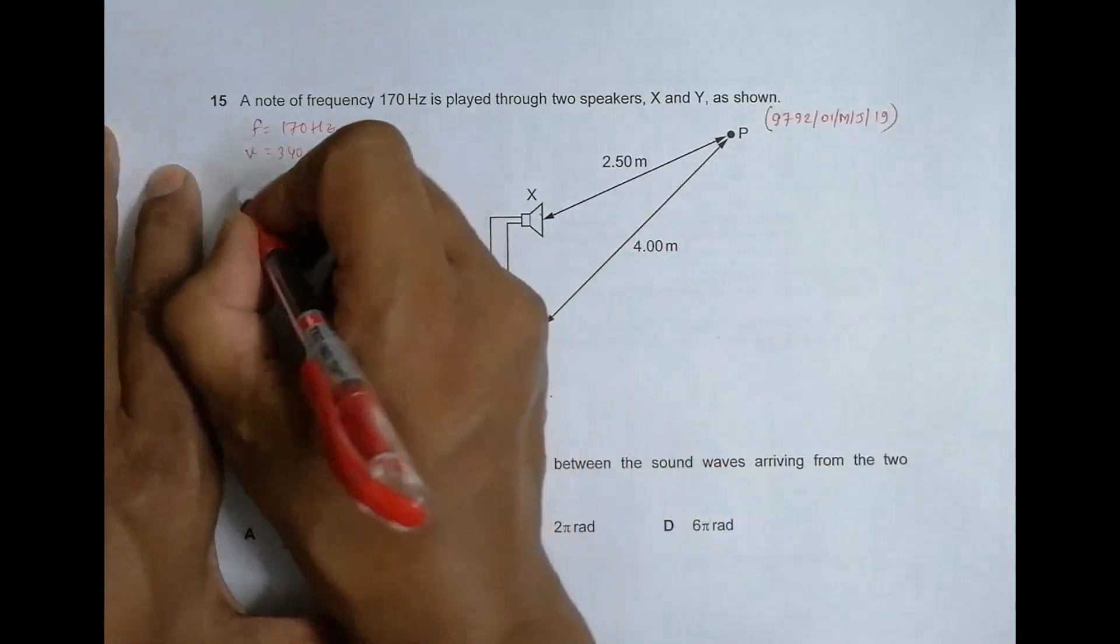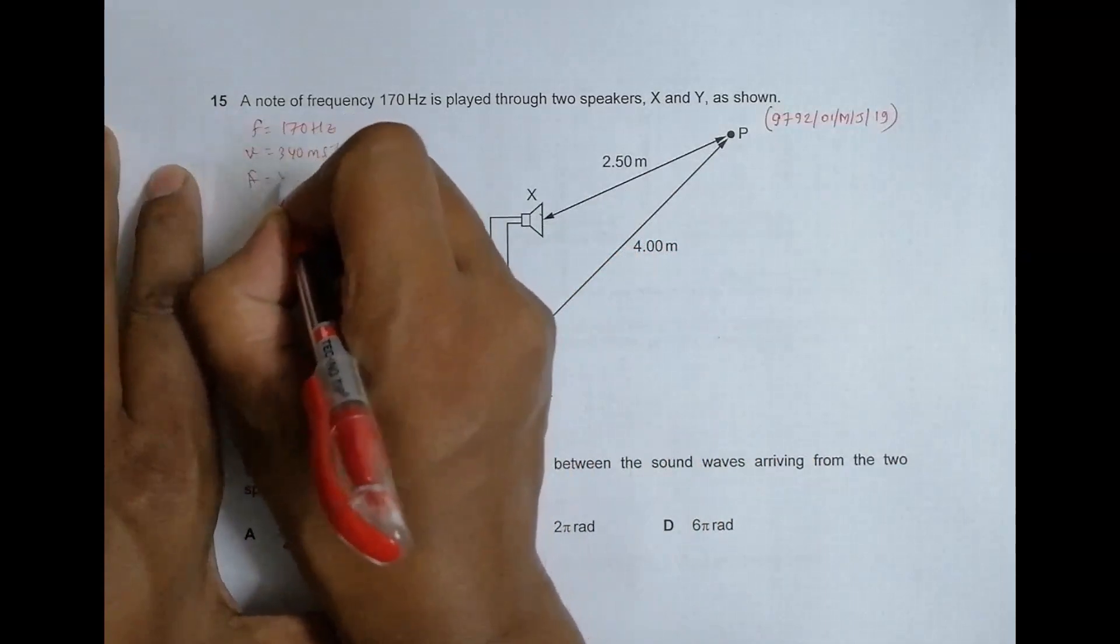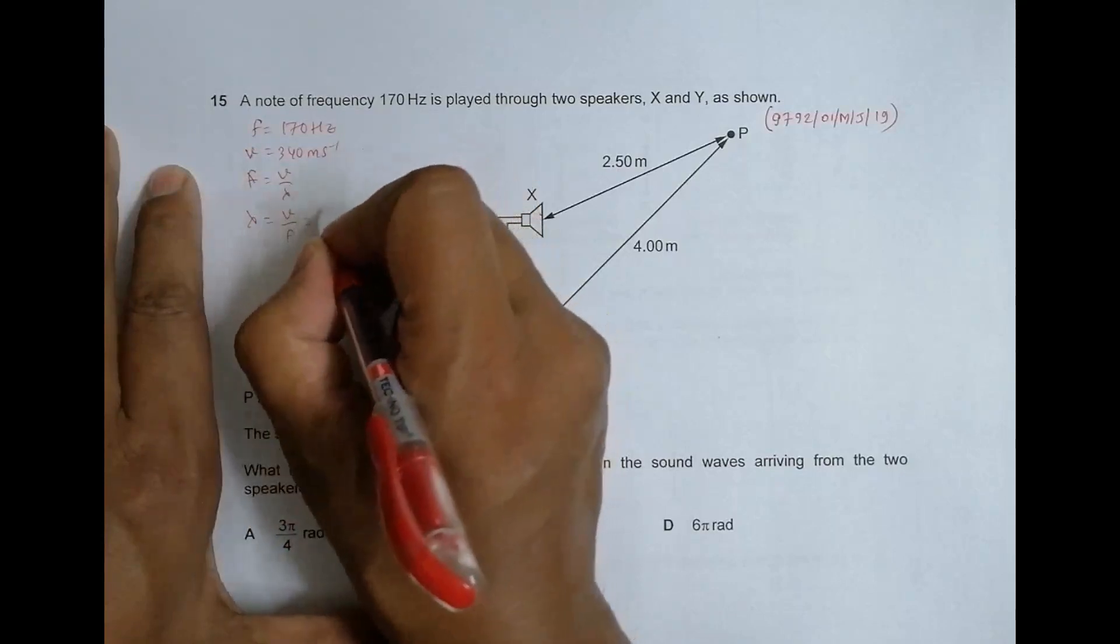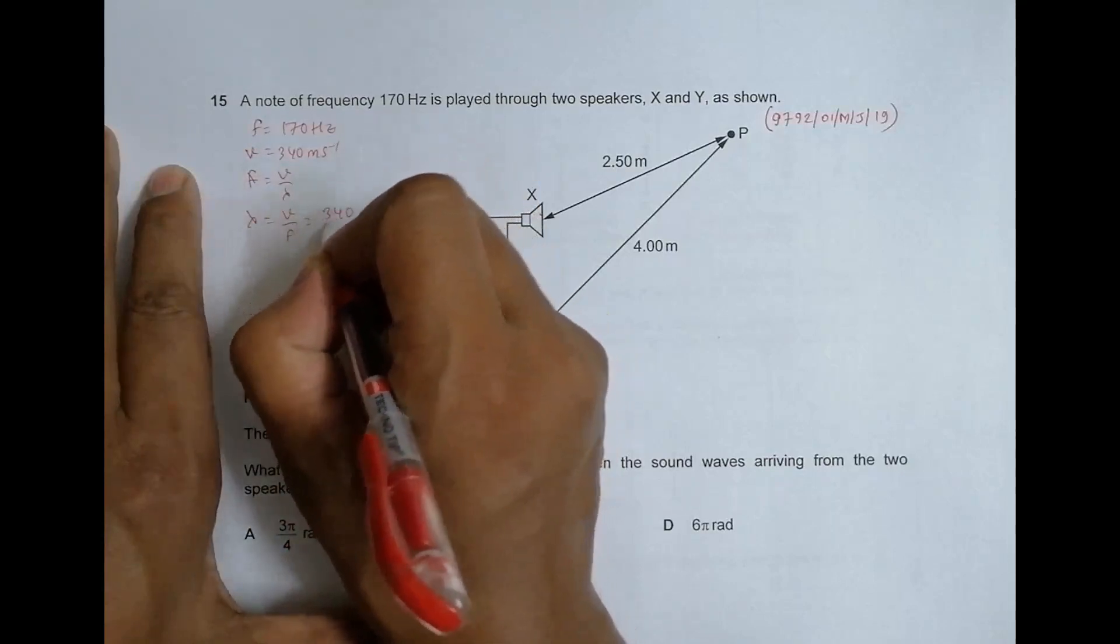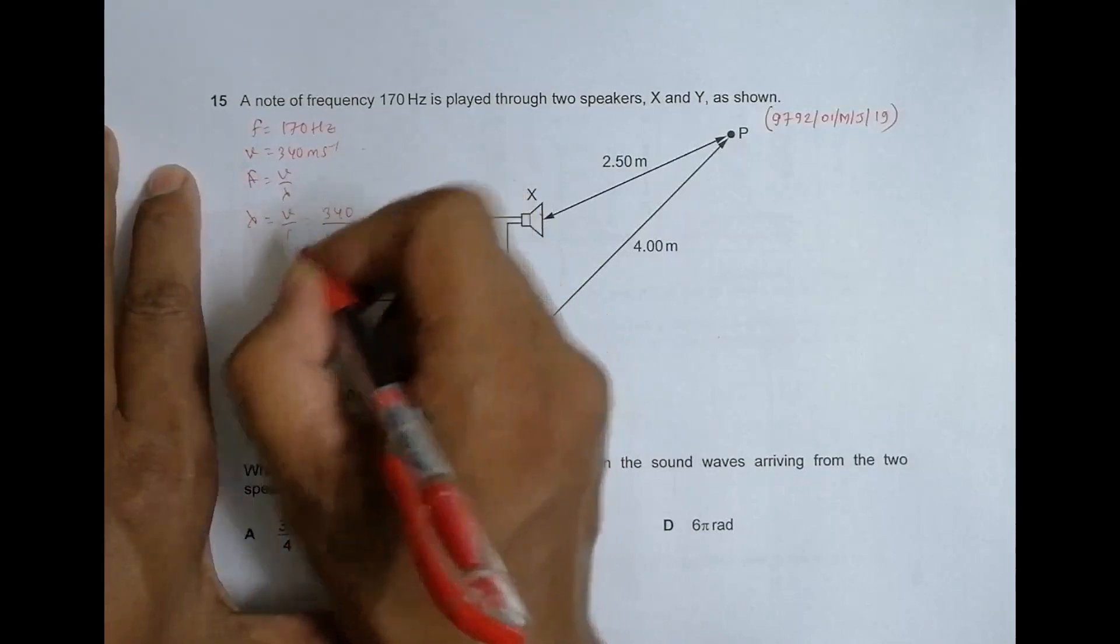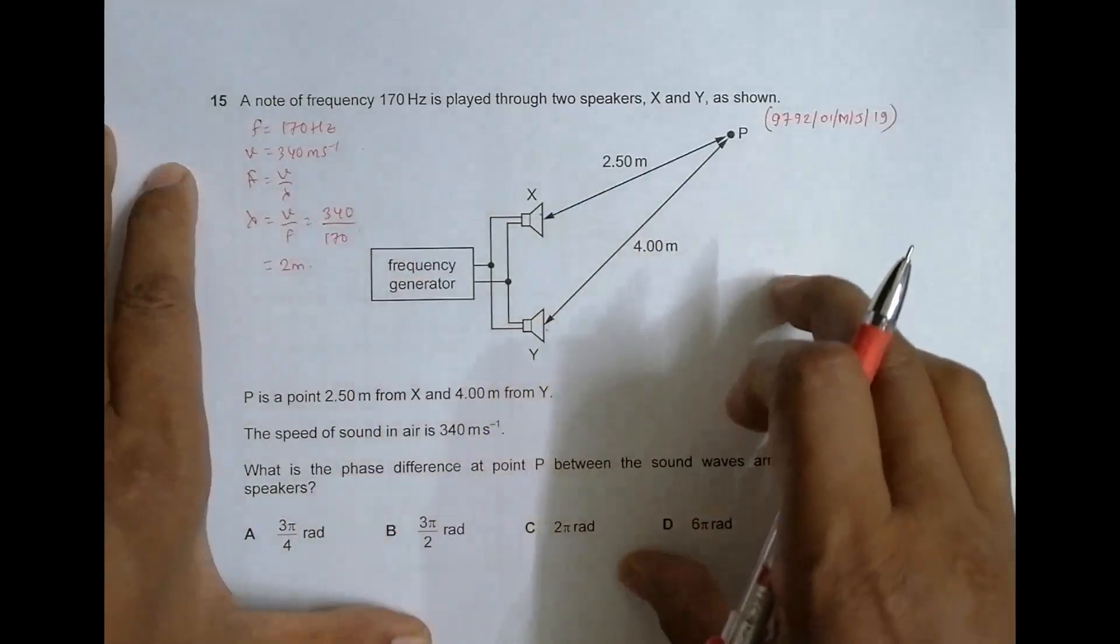First let us find lambda. We have frequency equals velocity by lambda, which gives us lambda equals velocity by frequency equals 340 meters per second divided by 170, which should be equal to 2 meters. So lambda is equal to 2 meters.